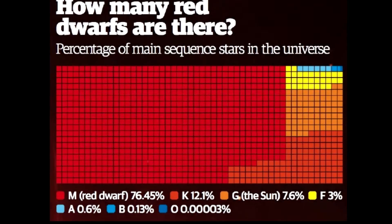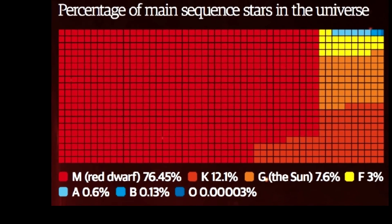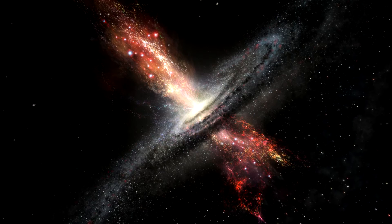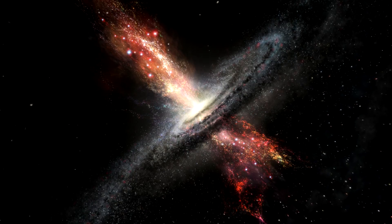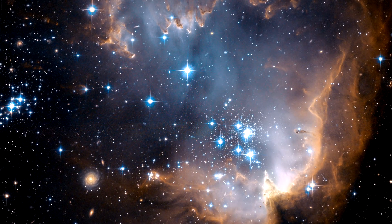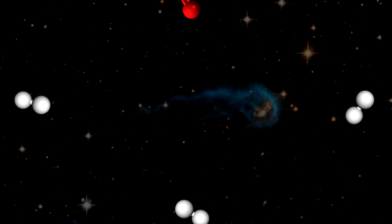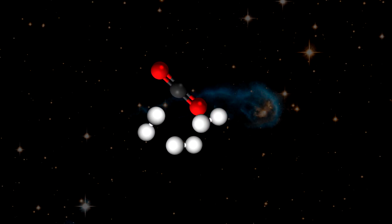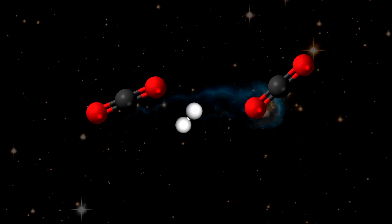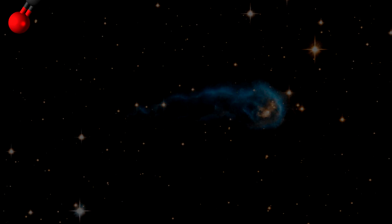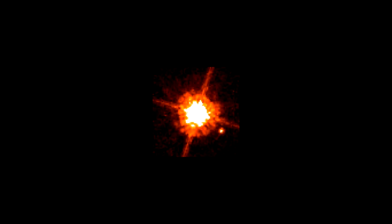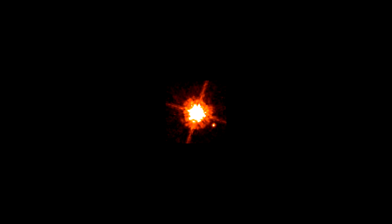So why are red dwarfs the average star? Why not some other type? Red dwarfs make up nearly 80% of all the stars we know about in the universe. Quite simply, they are probably the easiest to form. Stars form in the coldest, densest dust clouds — too hot and the pressure between molecules exceeds the gravitational pull; too sparse and the gravitational force isn't enough to capture molecules to form a star.